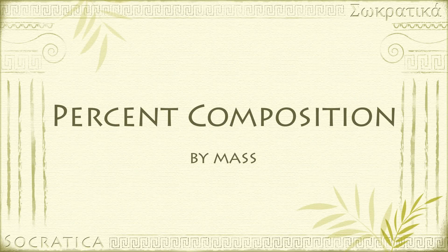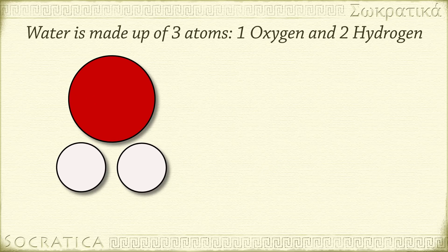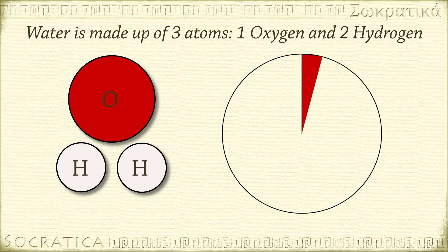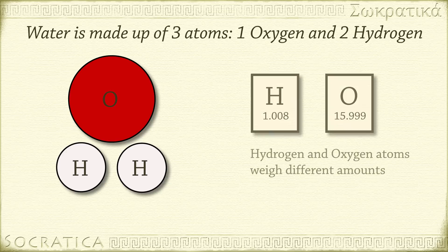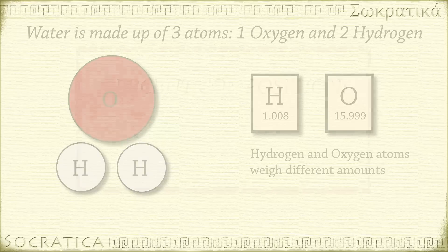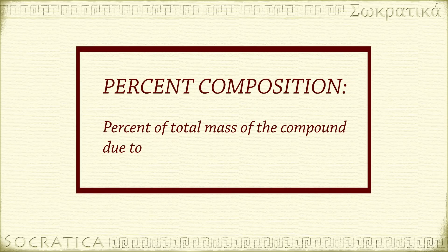Most compounds are made up of different kinds of atoms. For instance, water is made up of hydrogen atoms and oxygen atoms. One water molecule, H2O, is made up of three atoms: one oxygen atom and two hydrogen atoms. But would we say water is one-third oxygen and two-thirds hydrogen? No, not if we're talking about percent composition by mass. The percent composition of a compound is the percent of the total mass of the compound that is due to each component.